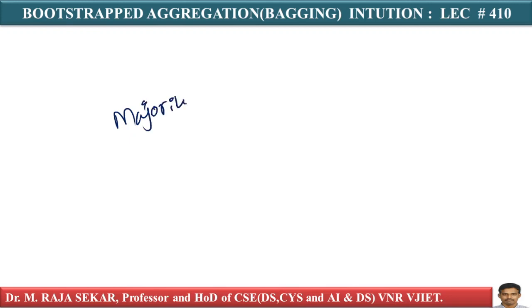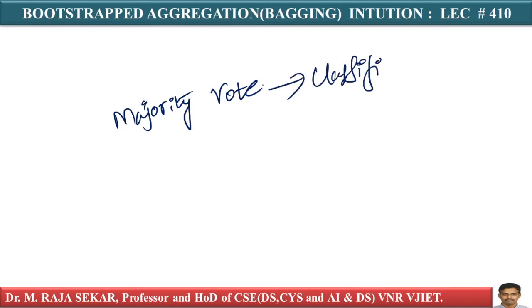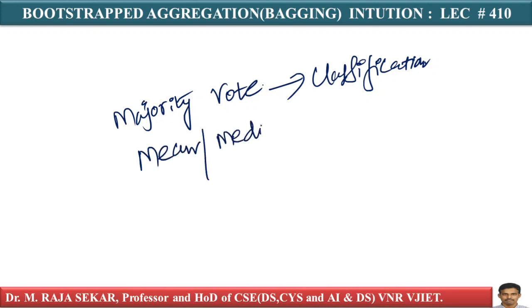To recall what we discussed: majority vote is extensively used for classification, and mean or median is used for regression. These are the two aggregation operations — a very simple idea.